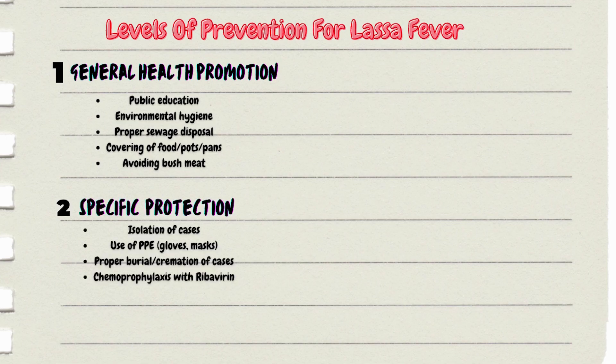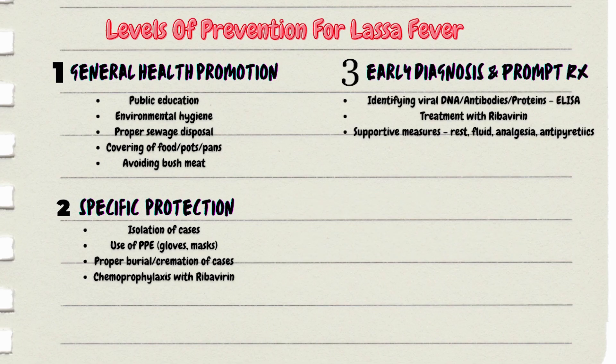For level two, specific protection, unfortunately there is no vaccine for Lassa fever, but we can isolate suspected or confirmed cases and use personal protective equipment like gloves, masks, and gowns. We can also properly bury or cremate dead bodies and use post-exposure prophylaxis with rifampicin. For level three, early diagnosis and prompt treatment, there is no screening test for Lassa fever, but diagnostic tests can identify viral DNA, antibodies or proteins using ELISA. Treatment includes ribavirin and supportive measures like rest, IV fluids, analgesics, and antipyretics.